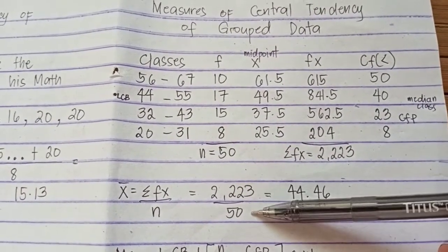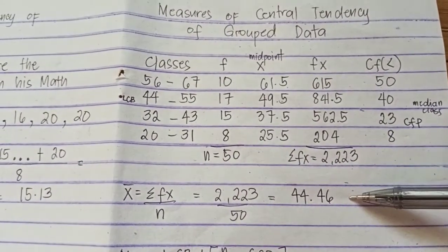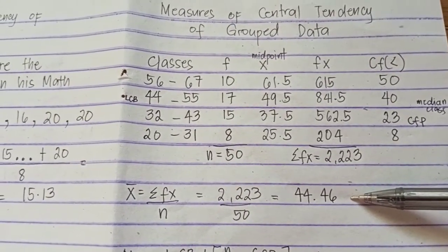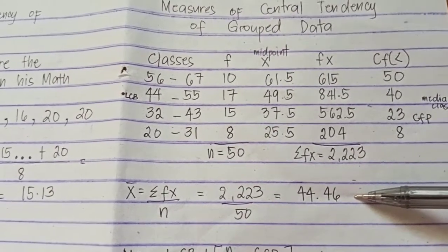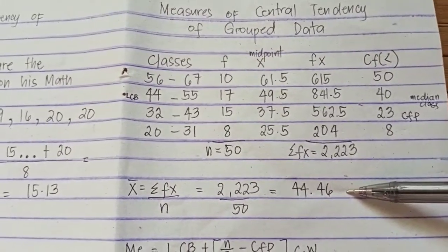You just divide the two values and then round it off to two decimal places. We obtain the value of the mean which is 44.46.